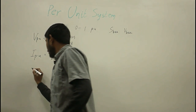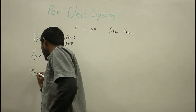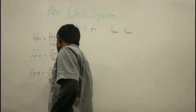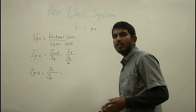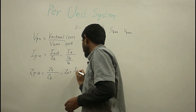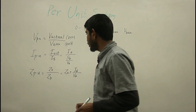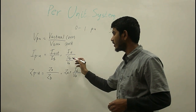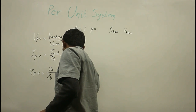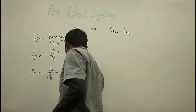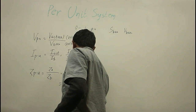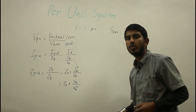For three-phase systems, I base is written as S base divided by (root 3 times V base). Z per unit can be given by Z actual divided by Z base, where Z base is the ratio of V base to I base. Substituting I base equals S base upon V base, we get Z per unit equal to Z actual times S base divided by V base squared.